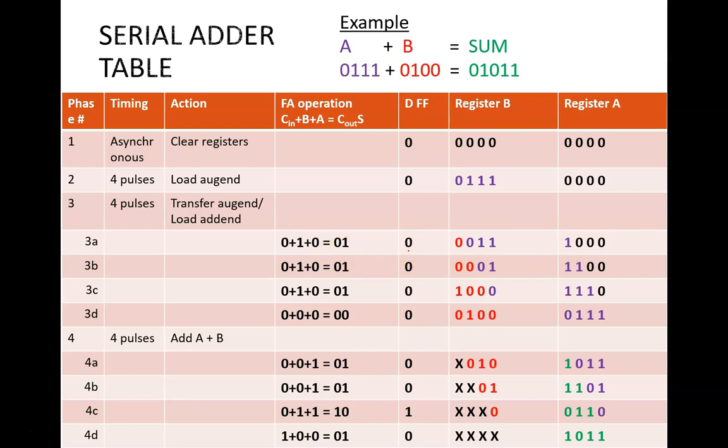So, during this one clock cycle, the full adder computes zero plus one plus zero equals zero one, and the registers update accordingly.